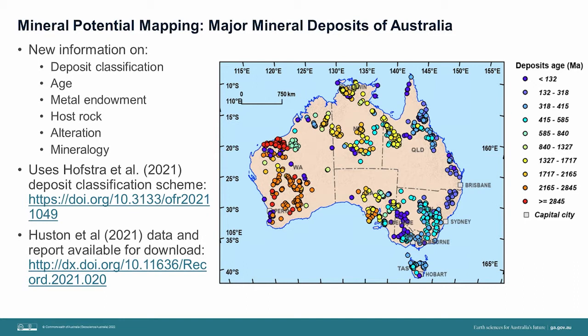So in addition to the mineral occurrence compilation, a comprehensive compilation of information on over 900 important Australian mineral deposits has been undertaken. The information includes, but isn't limited to, information on deposit classification or mineral system using the new deposit classification scheme of Hofstra et al., which was undertaken as part of the Critical Minerals Mapping Initiative, as well as the age of the deposits, metal endowment and information on lithology, host rock and alteration.